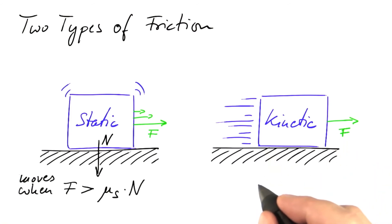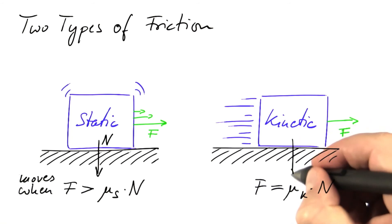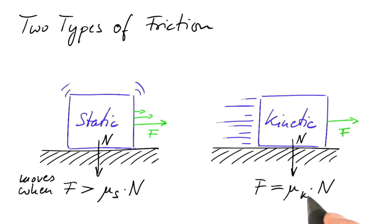And from experiments, we find that this force is some constant times the normal force, the force exerted by gravity in this case. And this is the coefficient for kinetic friction.